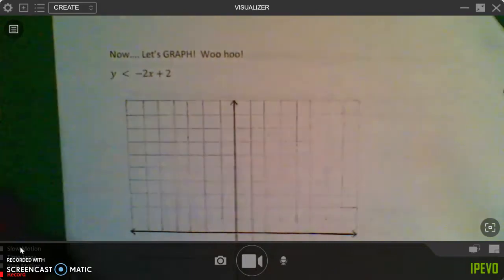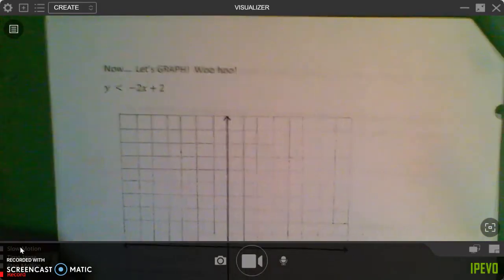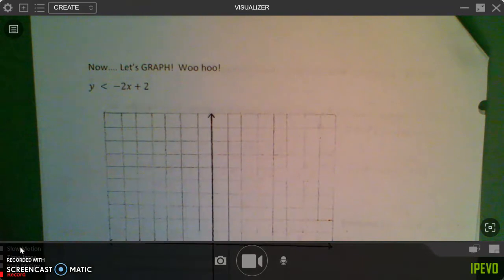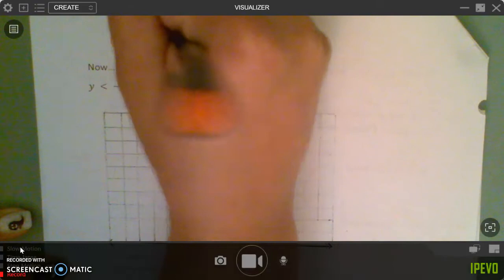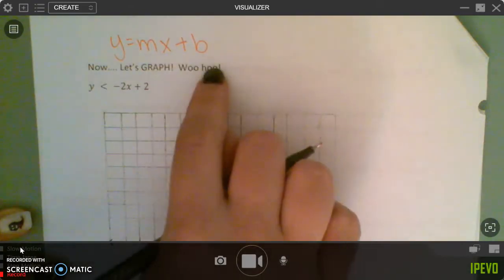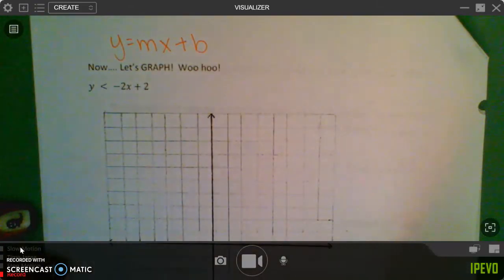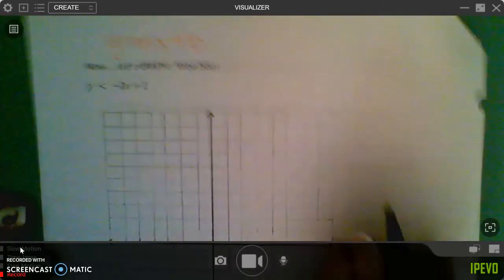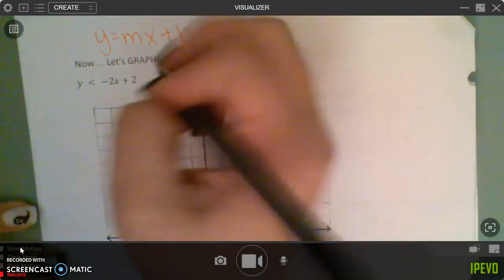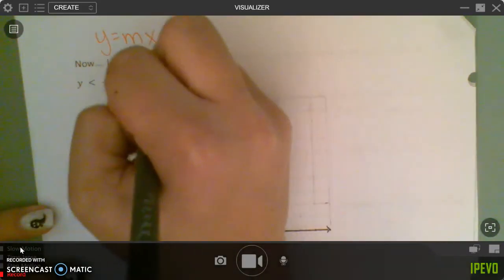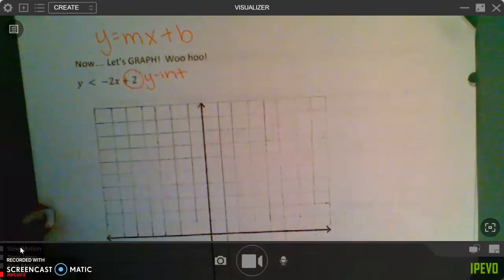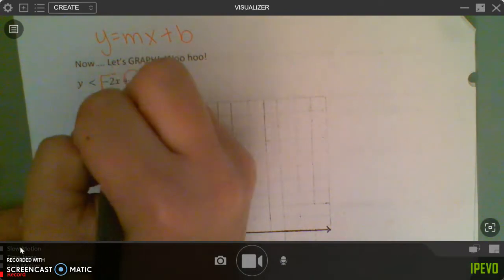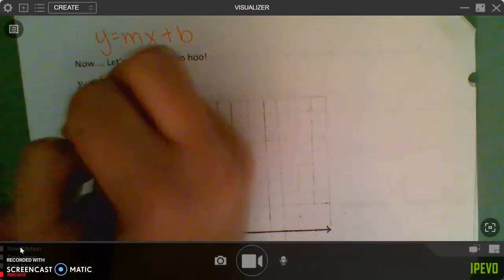Next we're going to actually start to graph. So remember, when you're graphing, whether it's a regular y equals equation or an inequality, it has to be in slope-intercept form, y equals mx plus b. So for this problem, it already is in y equals mx plus b. We have right here this 2, remember that's your y-intercept, that's the b, and then this negative 2 right here, that's your slope.